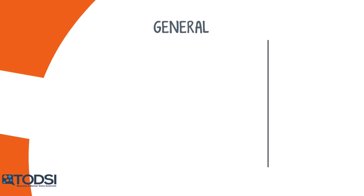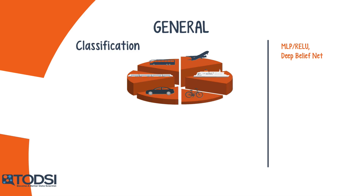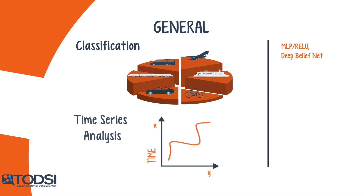In general, deep belief networks and multilayer perceptrons with rectified linear units, also known as RELU, are both good choices for classification. For time series analysis, it's best to use a recurrent net.